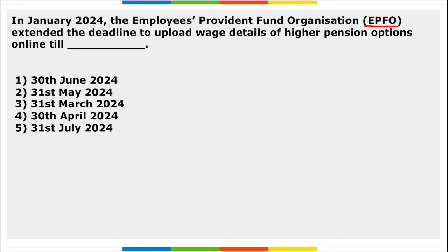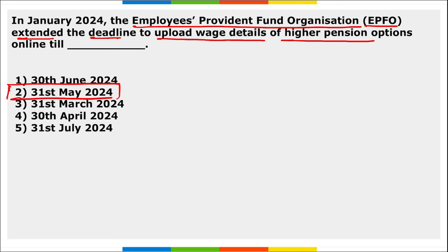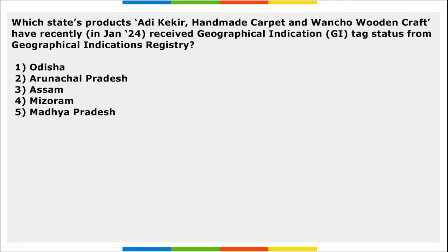EPFO — Employees' Provident Fund Organization — extended the deadline to upload the wage details of higher pension options online till 31st May 2024. Earlier the deadline was 31st December; it has now been extended to 31st May 2024.